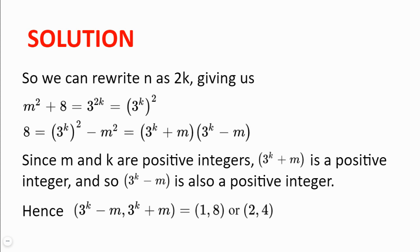If n is even, we can rewrite n as 2k, giving us m squared plus 8 equal to 3 to the power of 2k, which is equal to 3 to the power of k squared.